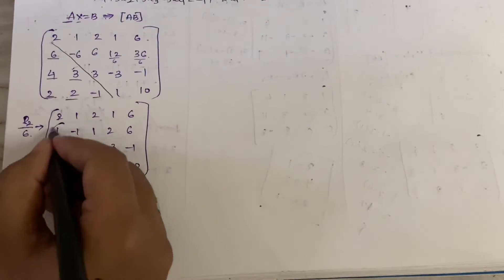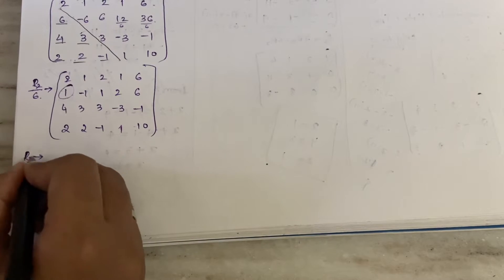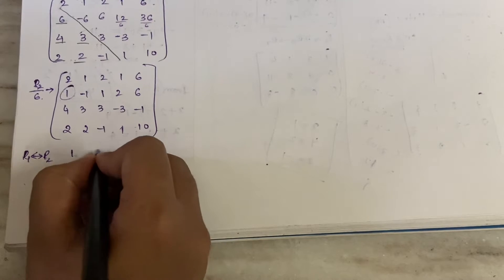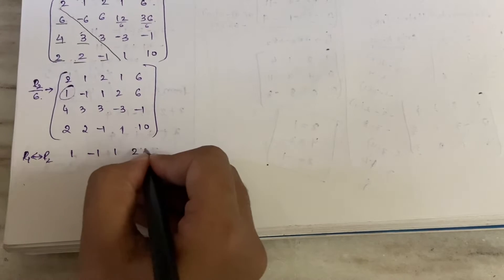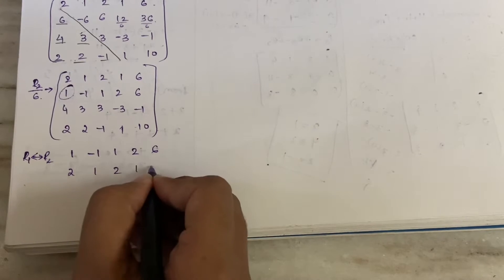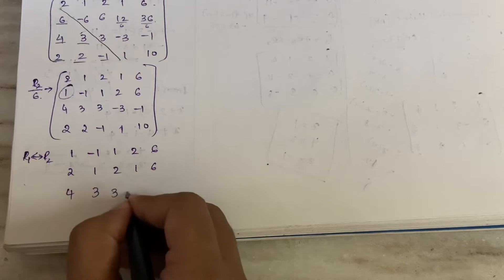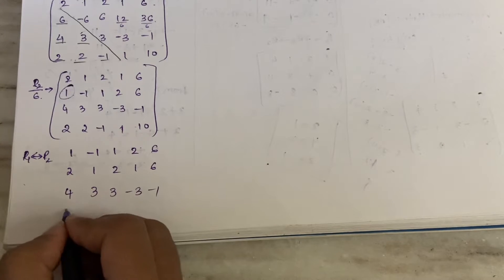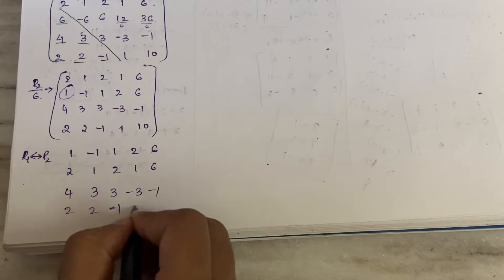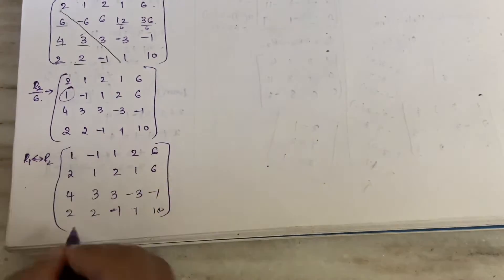Now we have 1 as the first element of R2, so we can interchange R1 and R2. After R1 ↔ R2, the new matrix is: R1: 1,-1,1,2|6; R2: 2,1,2,1|6; R3: 4,3,3,-3|-1; R4: 2,2,-1,1|10.